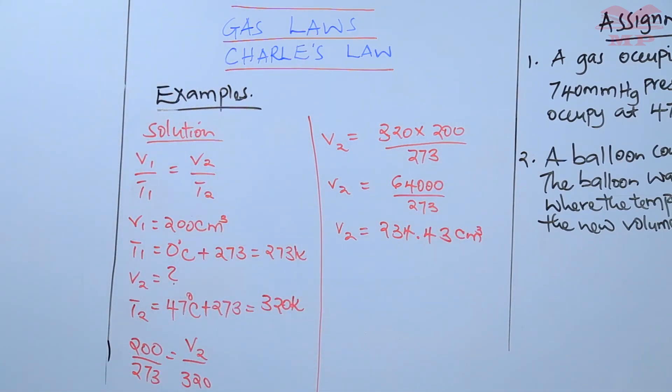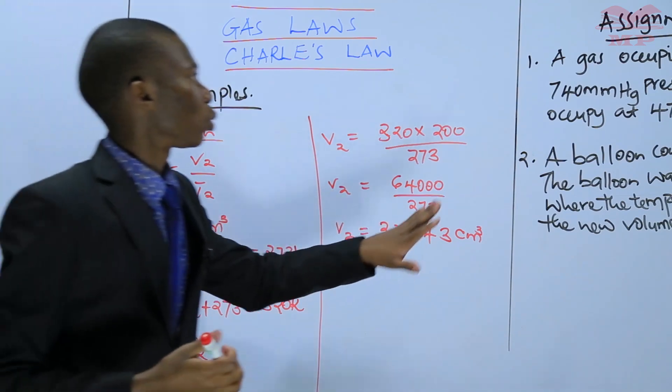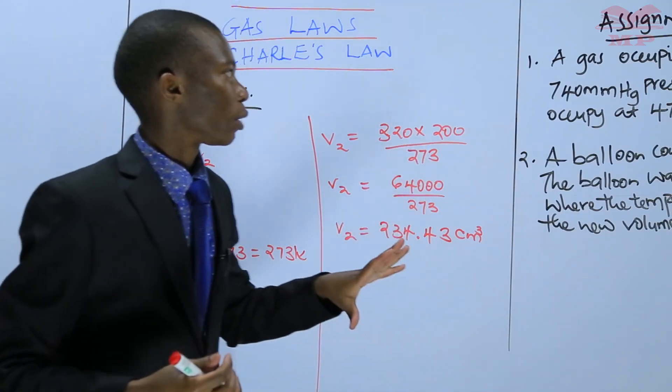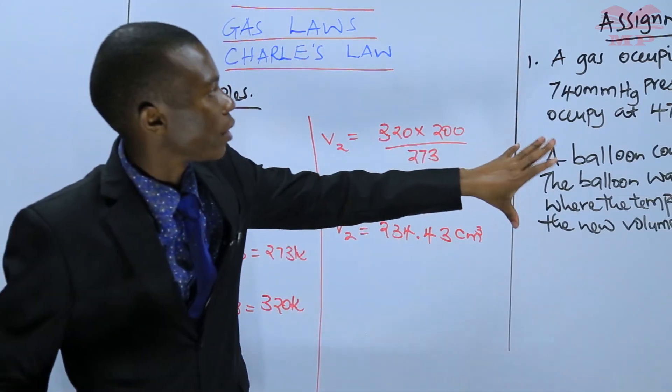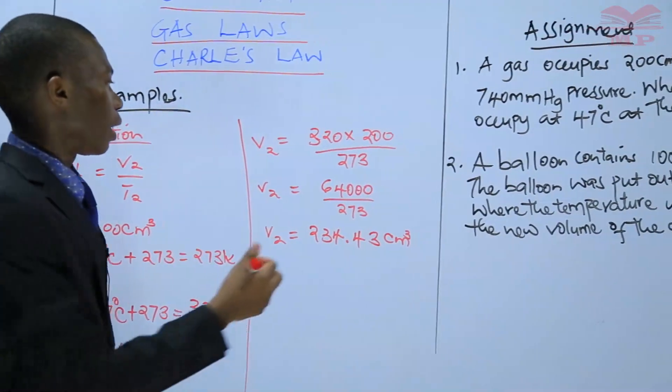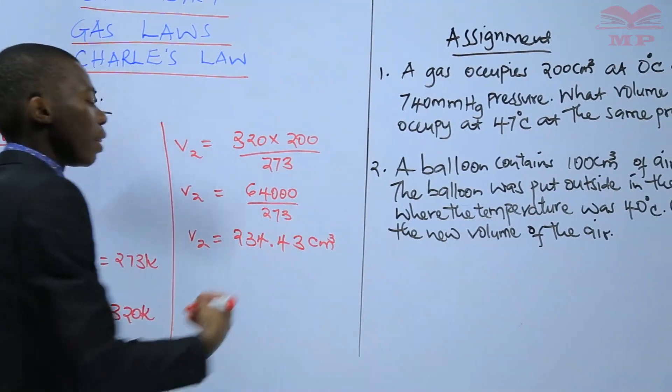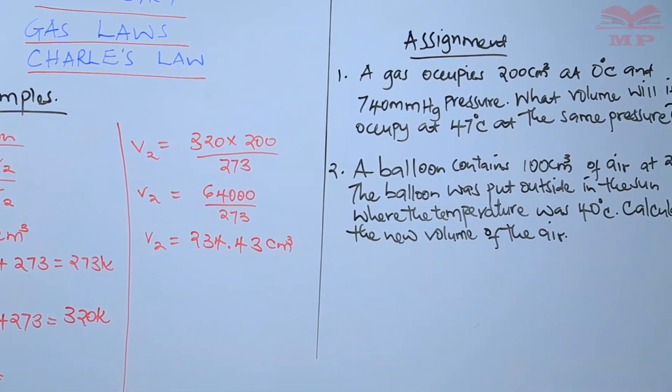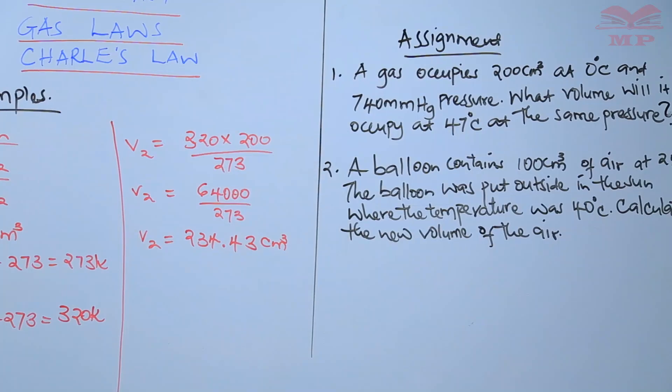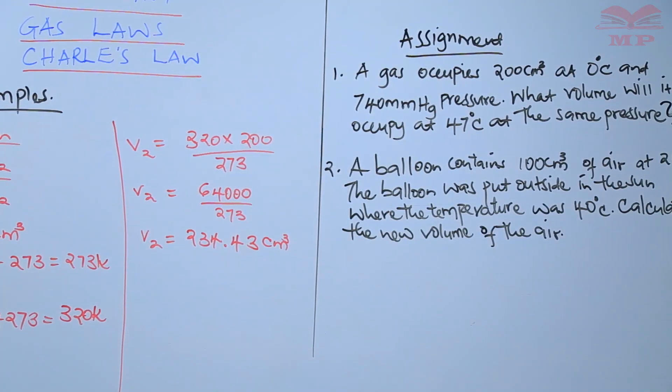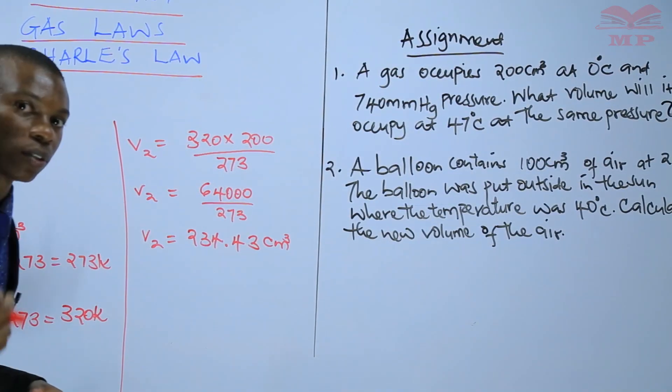That is the solution to our question. Again, the question was about what volume and the initial volume was 200 centimeters cubed. Therefore, you must include these units. So 234.43 centimeters cubed is our V2 and I hope you have gotten that. That's how you're supposed to go about the question one of the assignment.